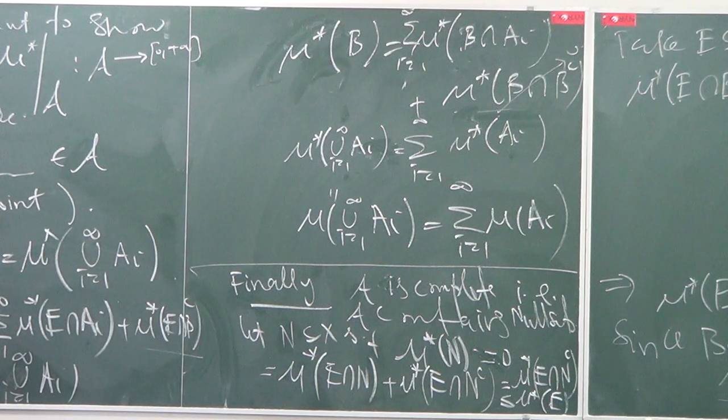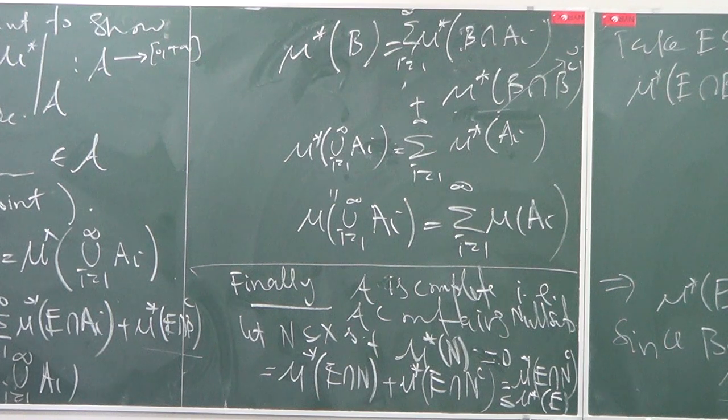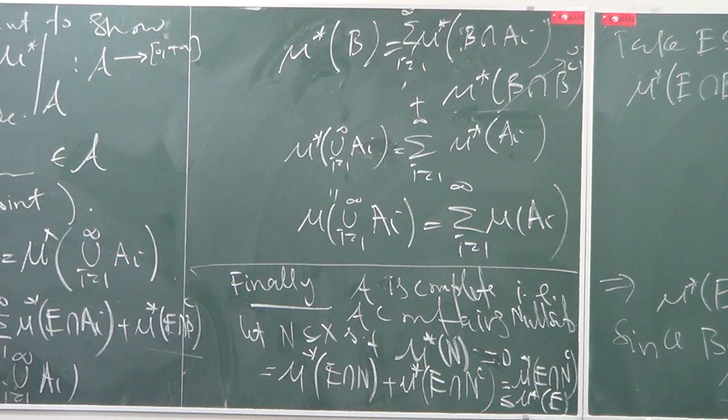We will show that E intersection N is contained in μ* of N. Yes, E intersection N is contained in N, and since μ* of N is zero, so μ* of E intersection N must be less than or equal to zero and bigger than or equal to zero, therefore it must be zero.